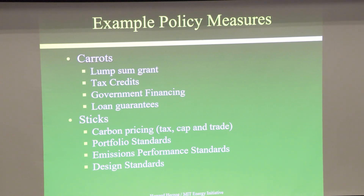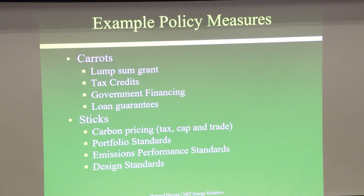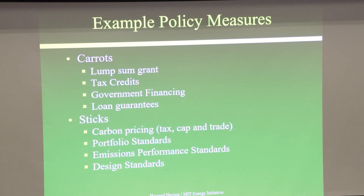Some policy model things: carrots — lump sum grants. We see this; there's money in some of the new policies to support big demonstration projects, paying 10, 20, maybe 30% of the capital cost. Tax credits — for carbon capture and storage this was called the 45Q tax credits. They created some tax credits for hydrogen called 45V. Those numbers come from the part of the US tax code where those tax credits reside. They have government financing and loan guarantees for projects.